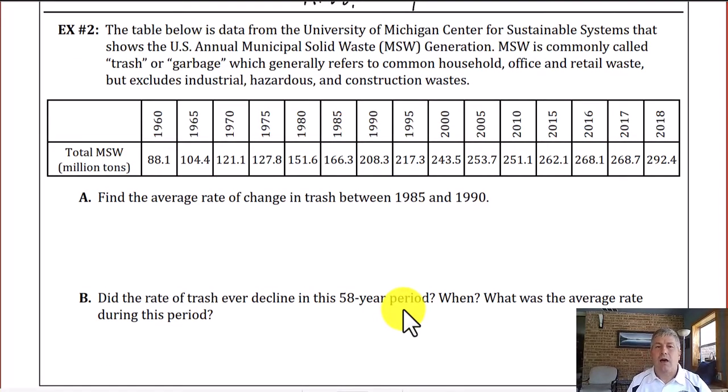Example 2 gives us a table of data from the University of Michigan for sustainable systems that shows U.S. annual municipal solid waste. So our years here are going to be our x's and the amount of waste in millions of tons are going to be our y's. Our inputs and our outputs, our domain and range are x's and y's.